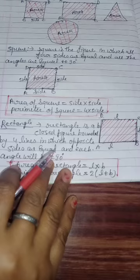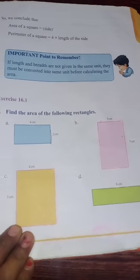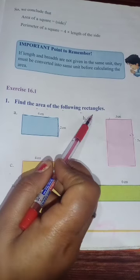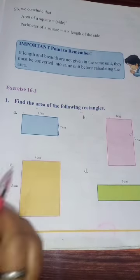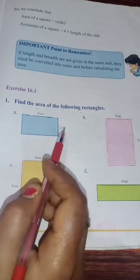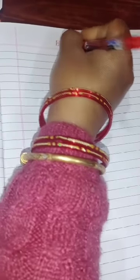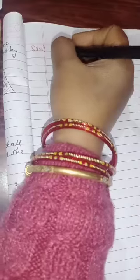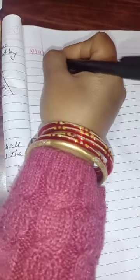Now let us come to the questions. Exercise 16.1, question number one, part (a). Find the area of the following rectangles. Length L = 4 cm, breadth B = 2 cm. Since length and breadth are different, this is a rectangle.